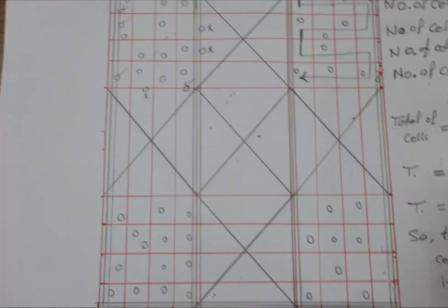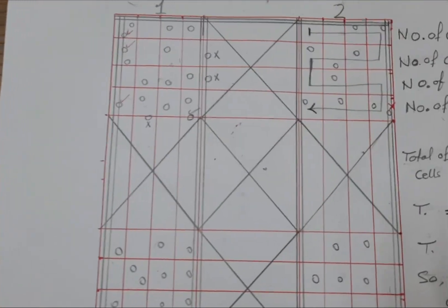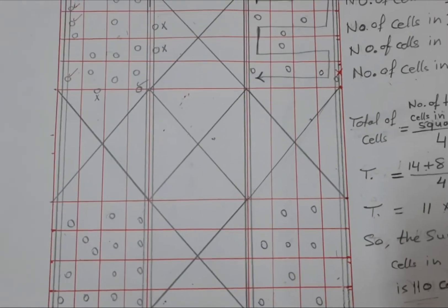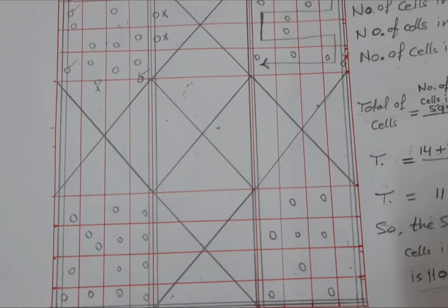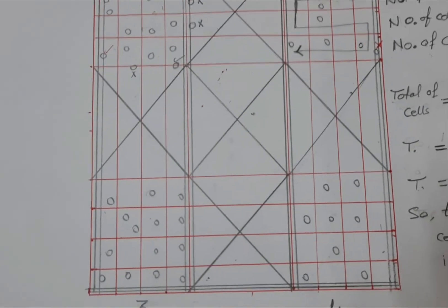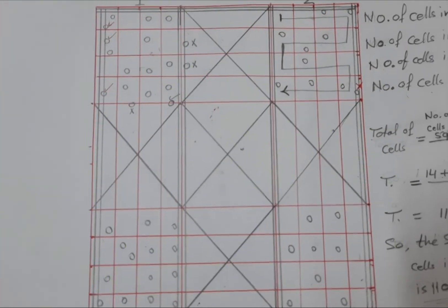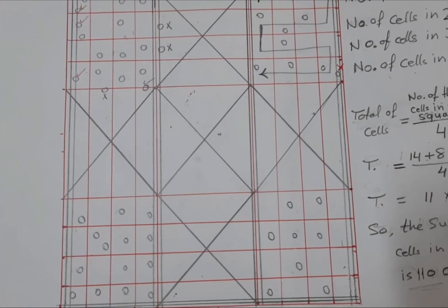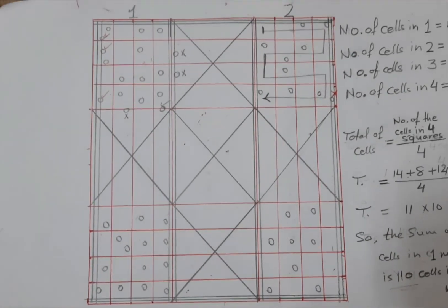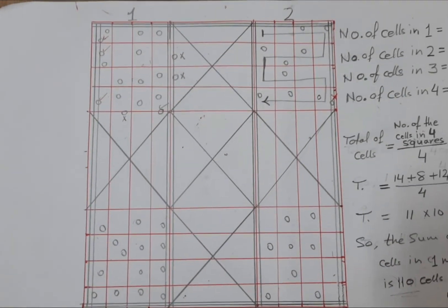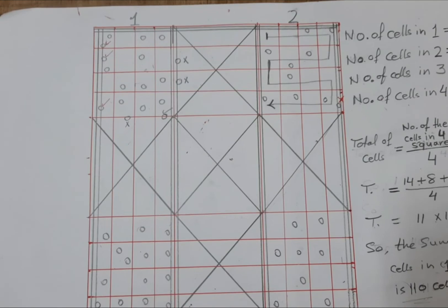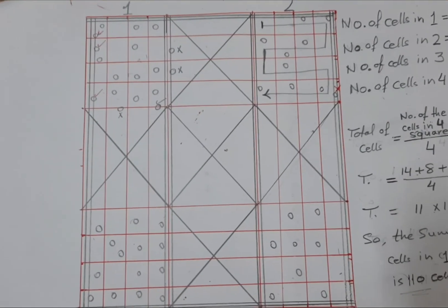Sometimes we will need to dilute cell suspensions to get the cell density low enough for counting. In that case, you will need to multiply your final count by the dilution factor.